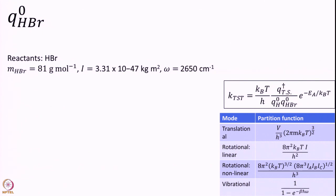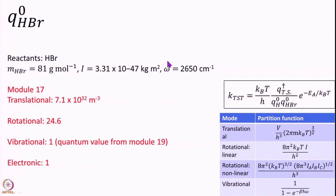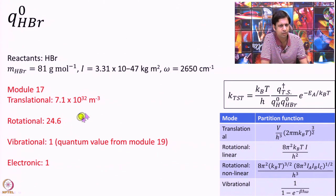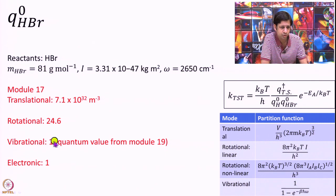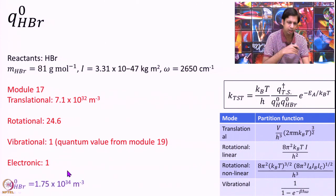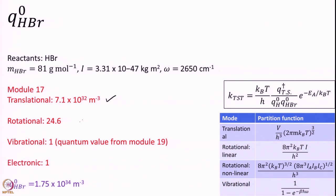Next, looking at HBr: the data needed is mass, moment of inertia, and frequency. For HBr we have already calculated all the components in a previous module — look back at module 17 where we plugged in the numbers. We got translational ~10³², rotational ~25, vibrational very close to 1 using the quantum answer from module 19, and electronic is 1. Multiplying all these together gives the partition function for HBr.